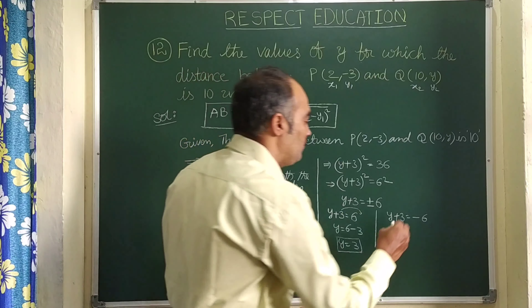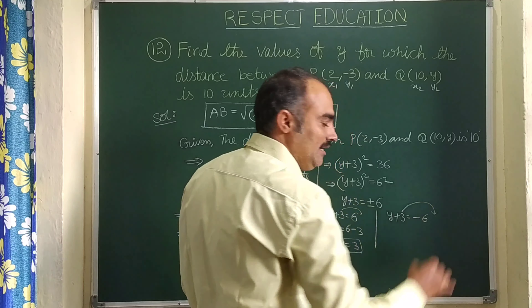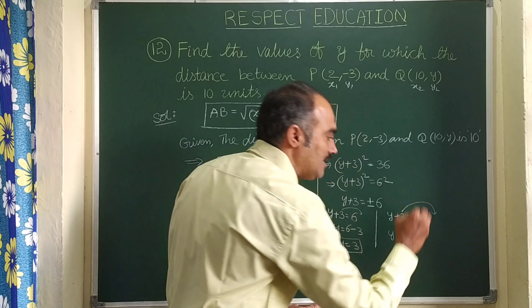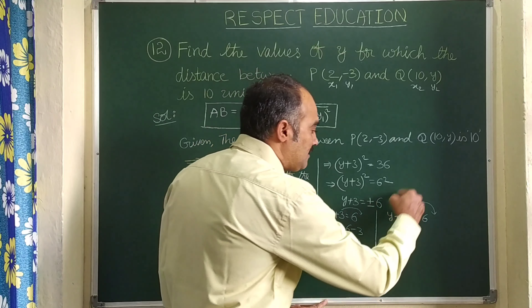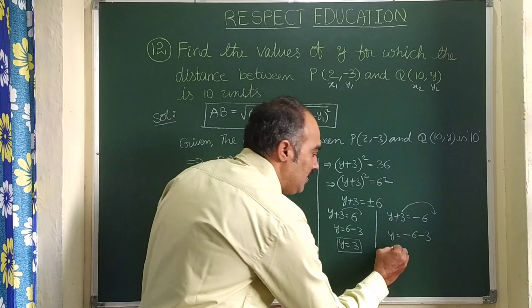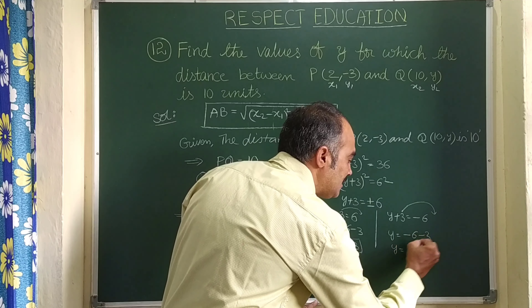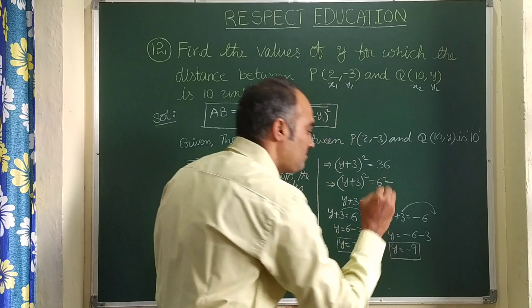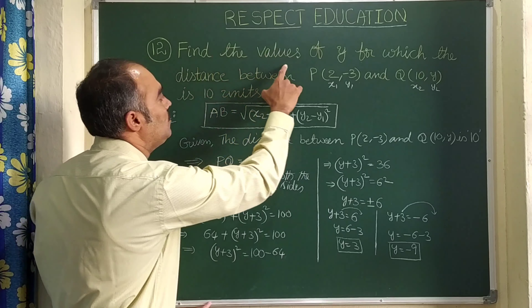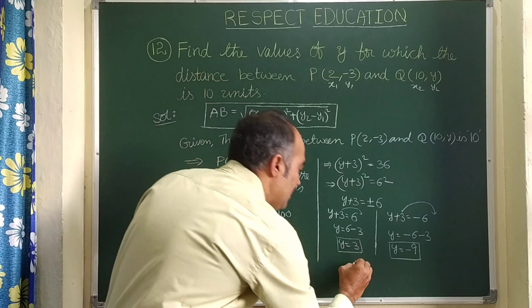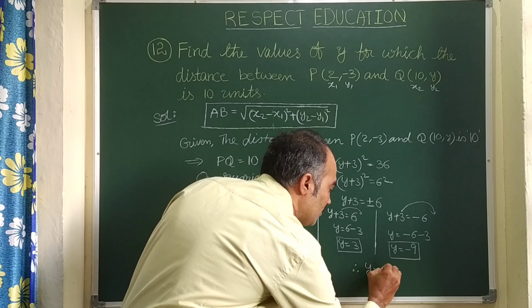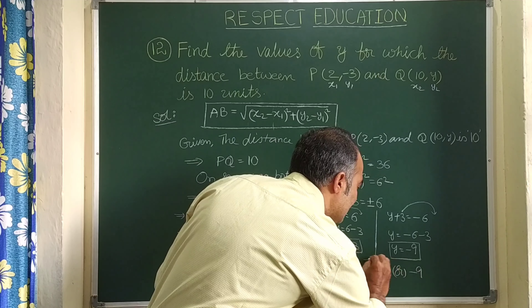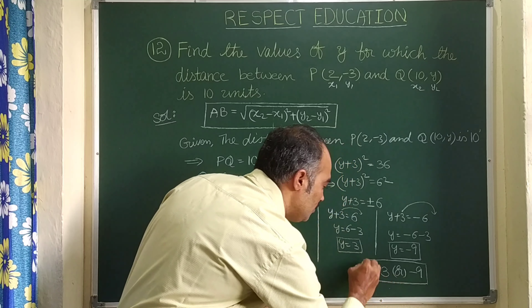Let us find the other value. Second case: y + 3 = -6, so y = -6 - 3 = -9. Therefore, y = 3 or y = -9. These are the values of y.